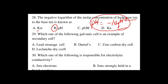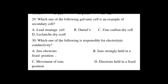Question number 29: Which one of the following galvanic cells is an example of a secondary cell? A. Lead storage cell, B. Daniel cell, C. Zinc-carbon dry cell. The answer is A — the lead storage cell. Secondary cells are rechargeable batteries.